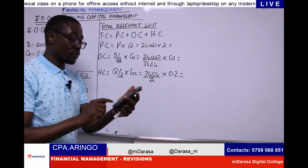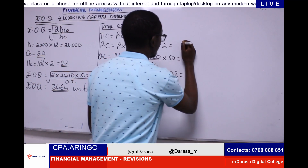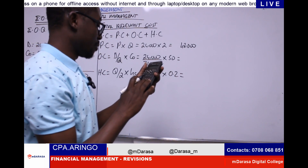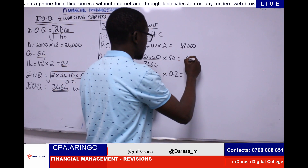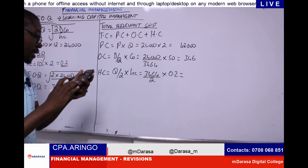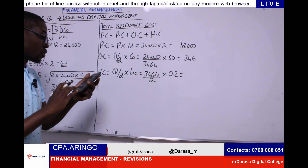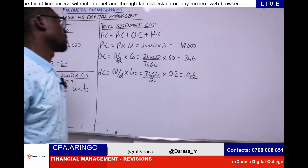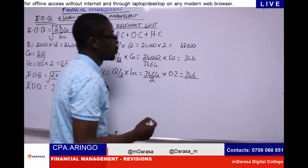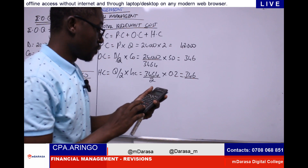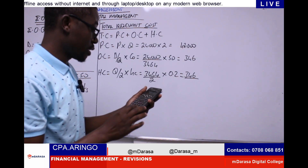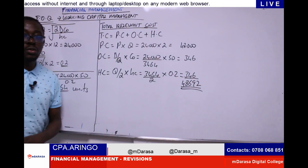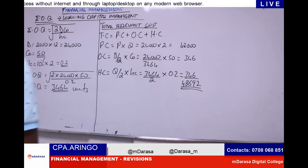So: 24,000 × 2 gives us 48,000. Then 24,000 ÷ 3,464 × 50 gives us 346. And 3,464 ÷ 2 × 0.2 gives us 346. Recall that at EOQ, holding cost always equals ordering cost. So total cost is 48,000 + 346 + 346, which gives us 48,692.